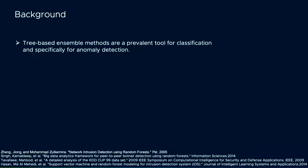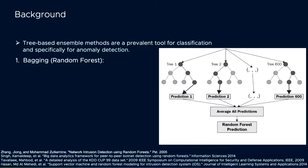Tree-based ensemble methods are a prevalent tool for classification in general, and specifically for anomaly detection. The first and well-known type is the bagging method, also known as random forest. In random forest, we train many independent decision trees in a random way. To get a prediction, we average the histograms of predictions from each decision tree and take the majority vote along with the confidence level of the classification.